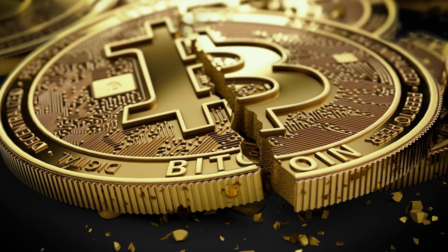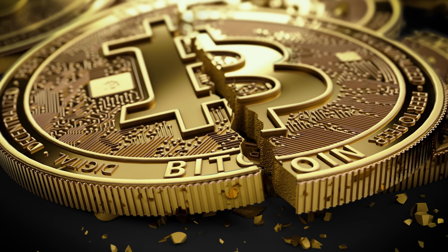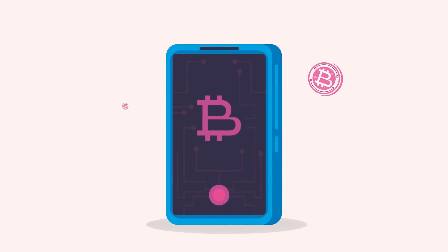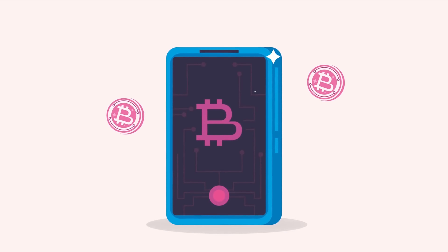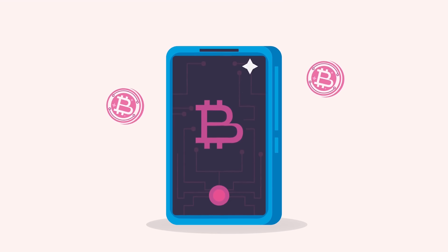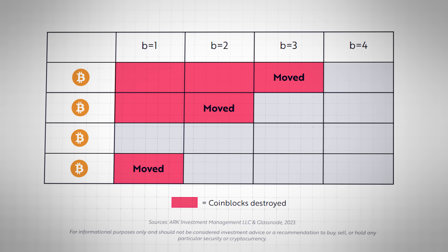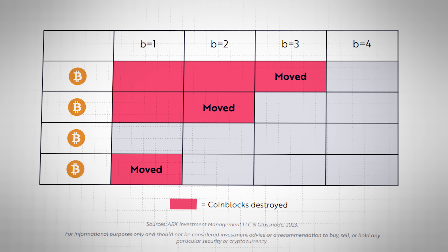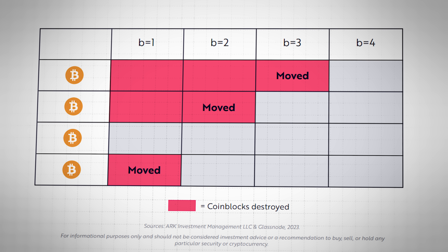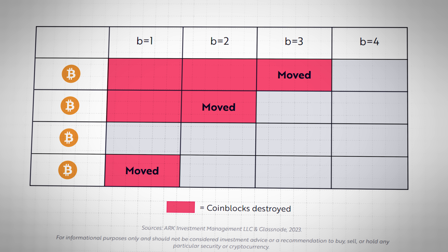This relates to a third concept the authors propose: coin-blocks destroyed. Whenever a coin is moved, it destroys all accumulated coin-blocks up to that point in time, resetting its coin-time back to zero. So if you held one BTC for 10 blocks — giving that BTC 10 coin-blocks — and you then decided to move this BTC, those 10 coin-blocks are destroyed.